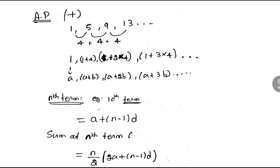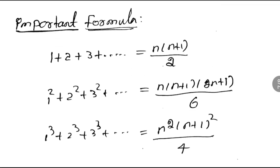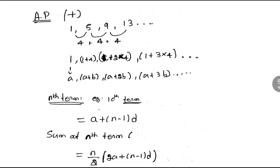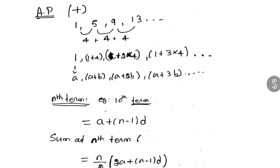Next, we can learn different steps. Next we can learn an AP Series. AP Series means we get a number series — for example 1, 5, 9, 13. We can call it a series where 1 plus 4 is 5, 5 plus 4 is 9, 9 plus 4 is 13. So the common difference is 4.